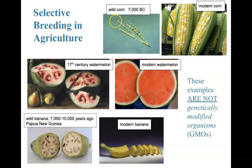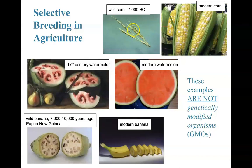Here we have wild corn — a representation of wild corn from 7,000 BC. Look how drastically the corn has changed. We'll get just a tiny bit of output from that wild corn. Look at the corn today — modern corn. Humans from 7,000 BC didn't go in and change those genes to give us this production. Just thousands of years over time, by selecting the corn that would make that offspring, we've gotten these massive corn products.